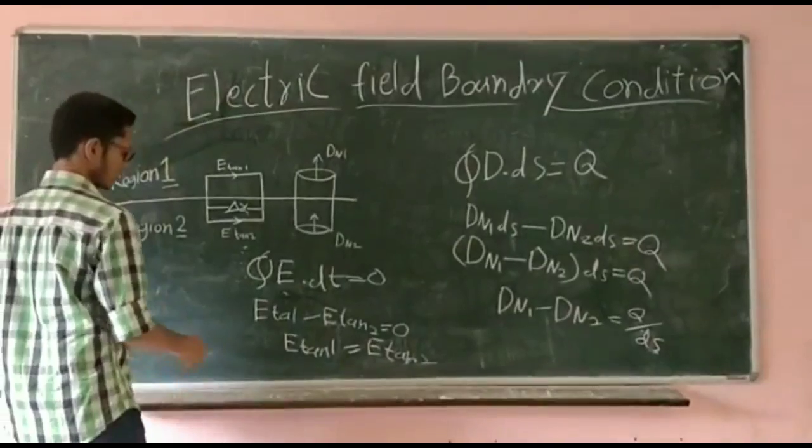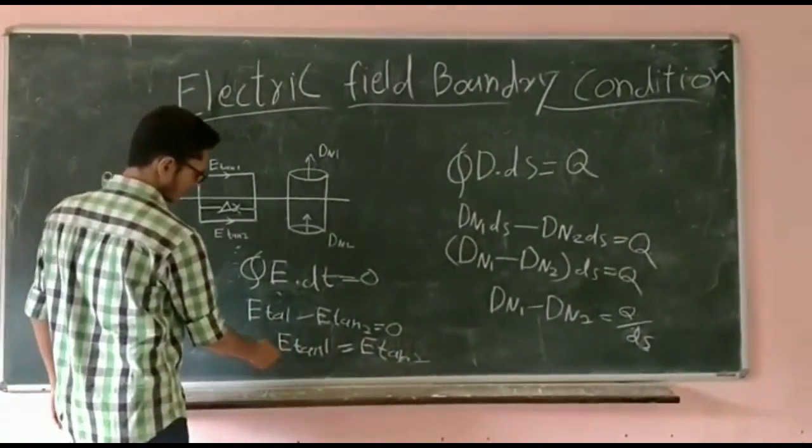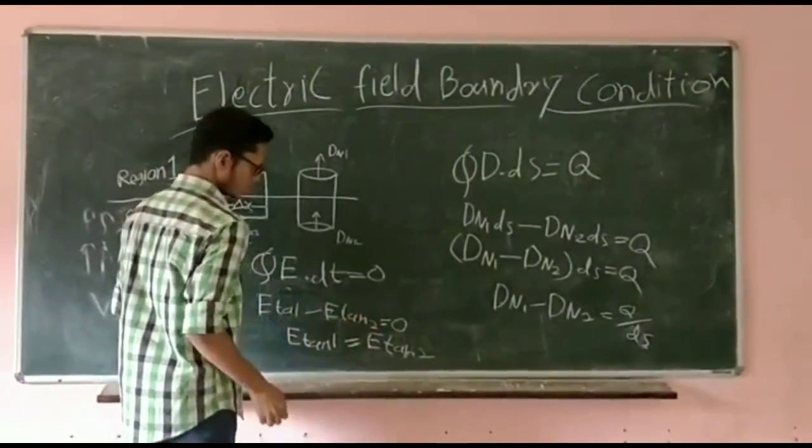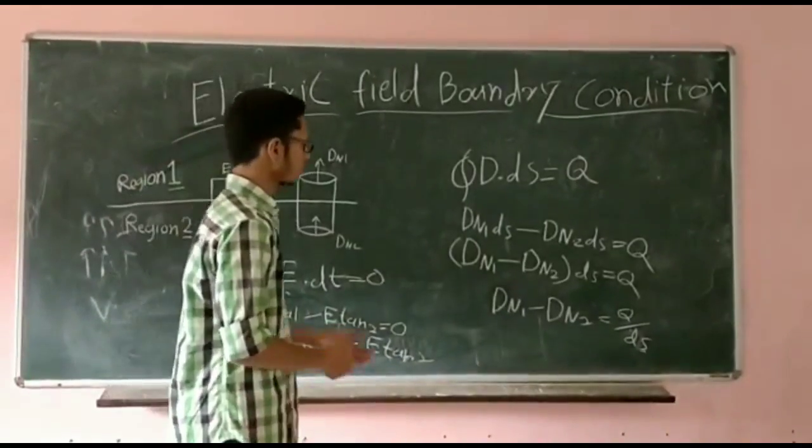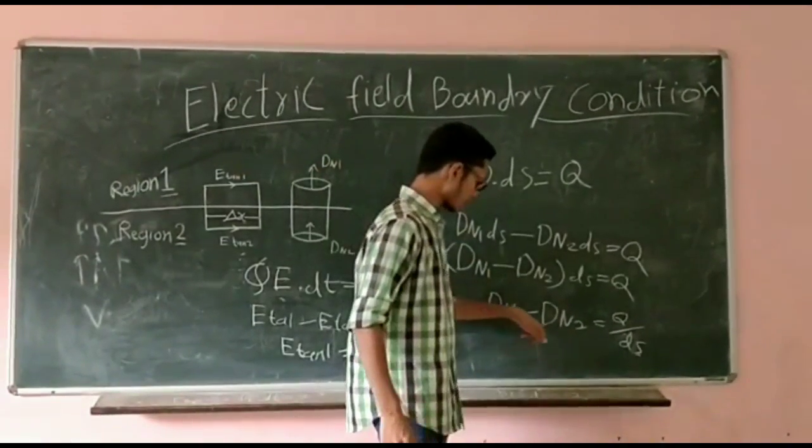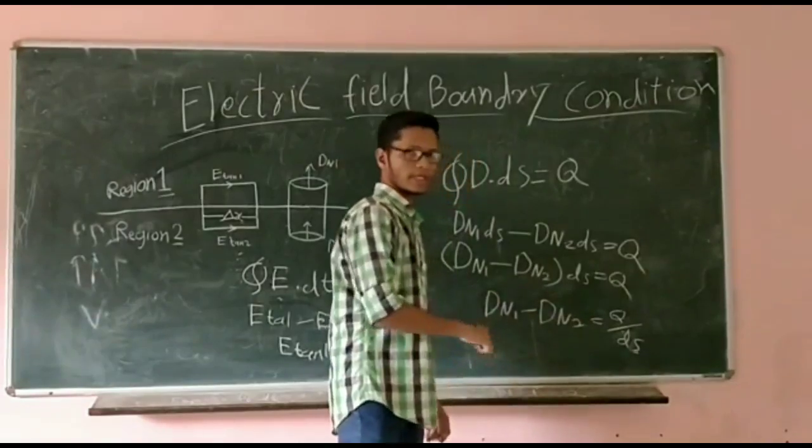We show that the tangential components E_tan1 and E_tan2 are equal. For the boundary condition on normal components, we get D_n1 minus D_n2 equals q over area.